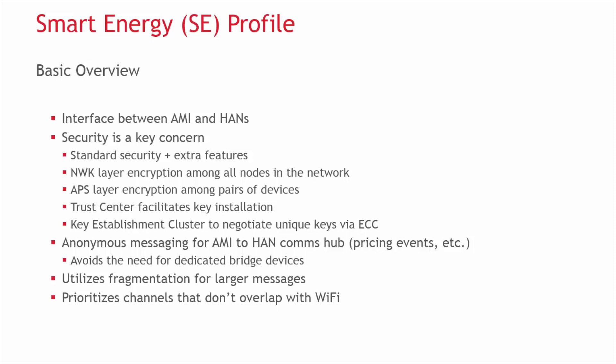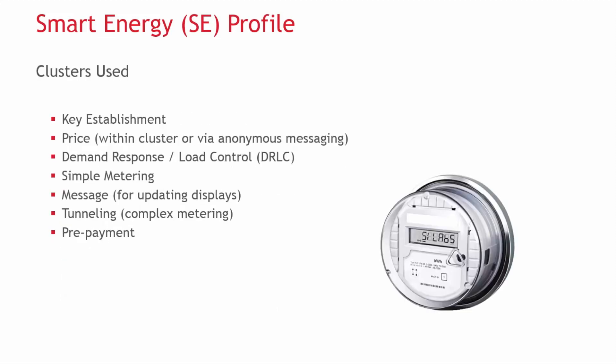SE also uses fragmentation, which is actually required. This allows a message to be broken up if it would normally be too big for a typical Zigbee packet. Similar to HA, SE attempts to use channels that do not overlap with Wi-Fi channels. SE uses the key establishment cluster already discussed, as well as pricing for delivery of product data about utility service, and demand response and load control — which is the utility's ability to regulate electricity and other usage in your home in the event of a grid shortage.